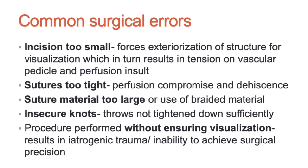Common surgical errors — things I still remind myself not to fall into. Probably one of the biggest is an incision that is too small, particularly for any surgery occurring within a body cavity: abdominal or thoracic procedures. If your incision is too small, the only way to achieve visualization is to apply a lot of retraction or to exteriorize the structure and apply trauma that way.